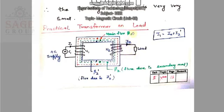So you can say that this I1 is equals to I0 plus I2 dash where what is this I2 dash? I2 dash is the amount of current which secondary winding demands from the primary winding. And this I2 dash is just opposite to this I2. And what is this I0? This I0 is the core current.